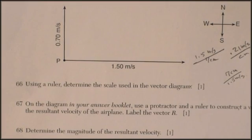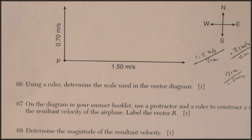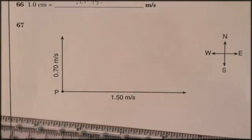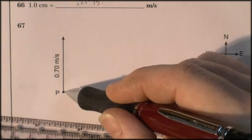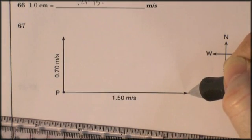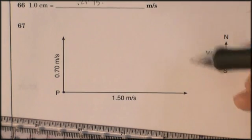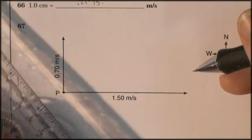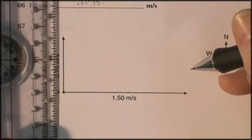Question 67. On the diagram in your answer booklet, use a protractor and ruler to construct a vector to represent the resultant velocity of the airplane. So let's do this. All right. Now, the airplane wants to go 1.5 meters per second that way. The wind's going to blow it 0.7 meters per second that way.